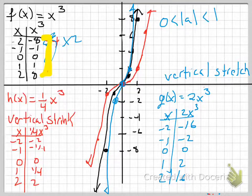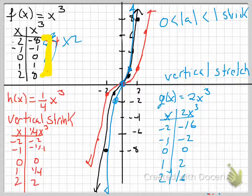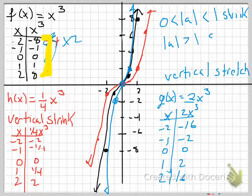If it's between 0 and 1, and I just talked about the absolute value, because if it's a negative, it just reflects it over the x-axis. So if it's between 0 and 1, then that's going to be a shrink. So this one would be a shrink. And if it's larger than 1, like 2, it's going to be a stretch.